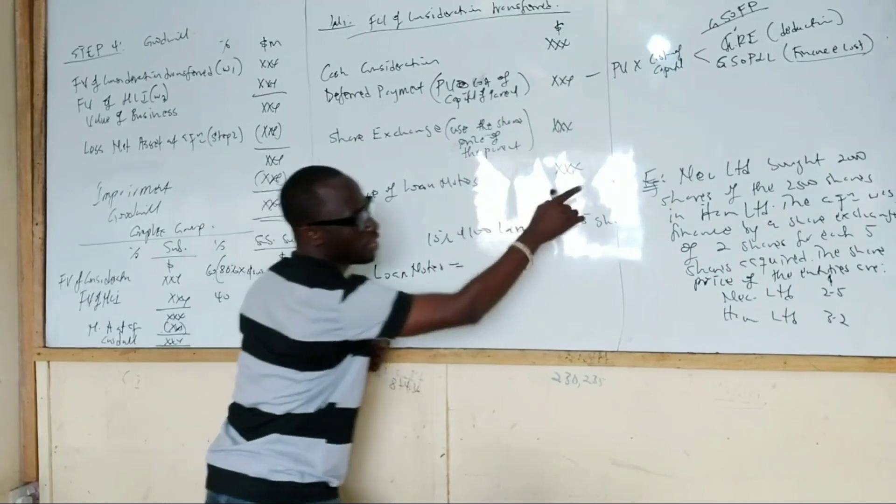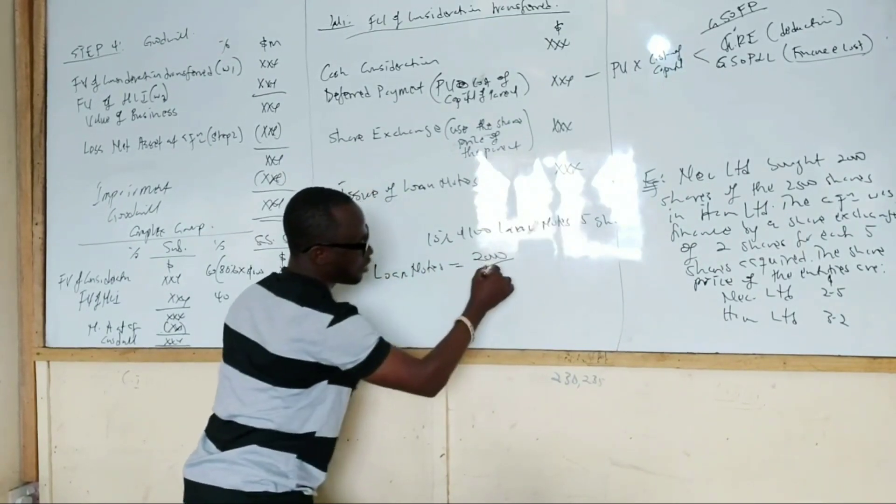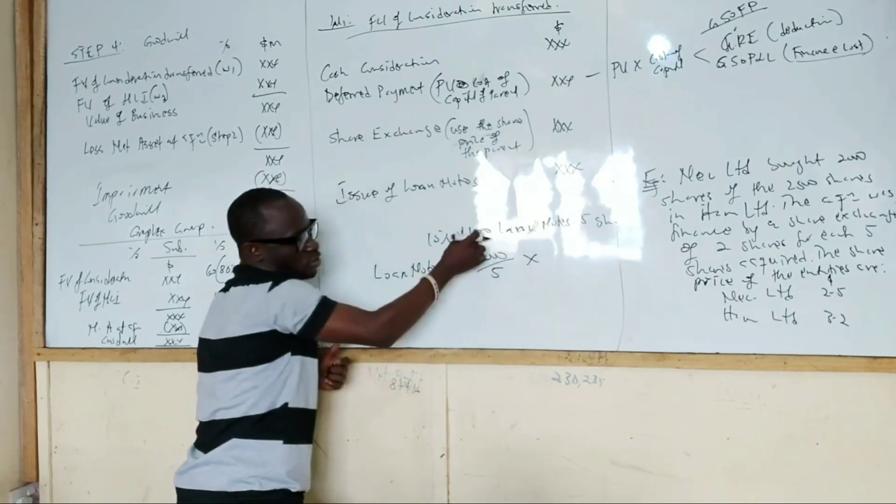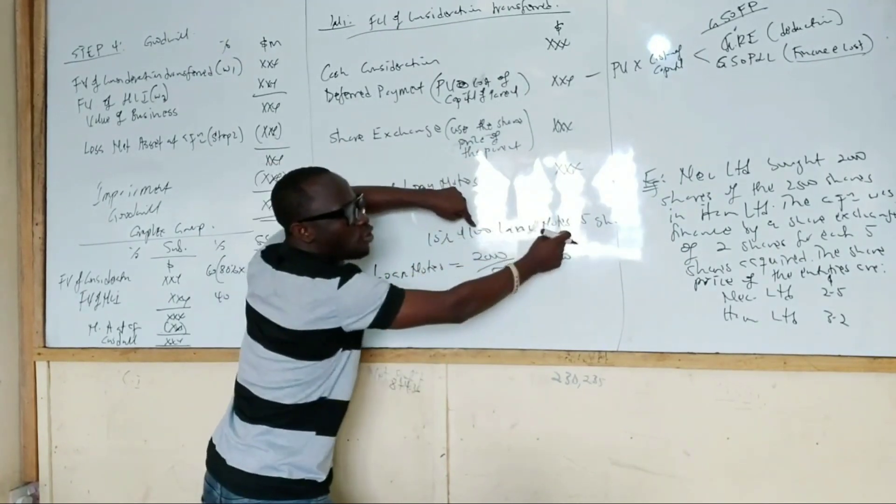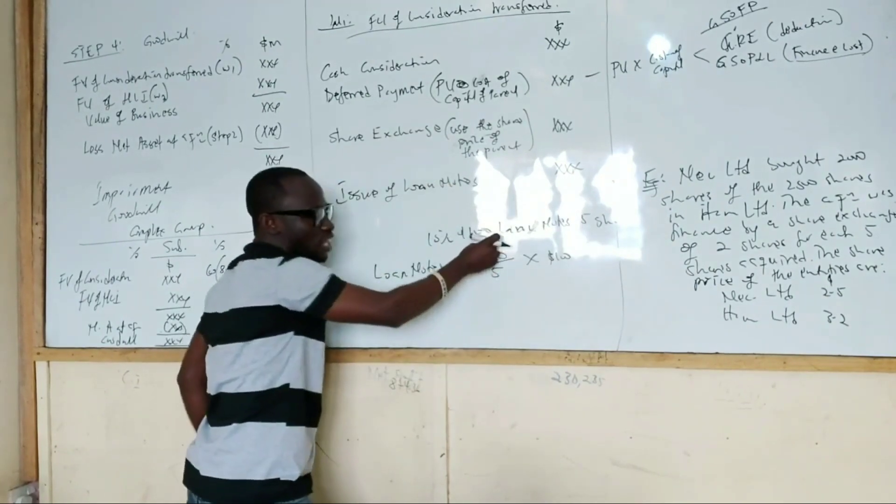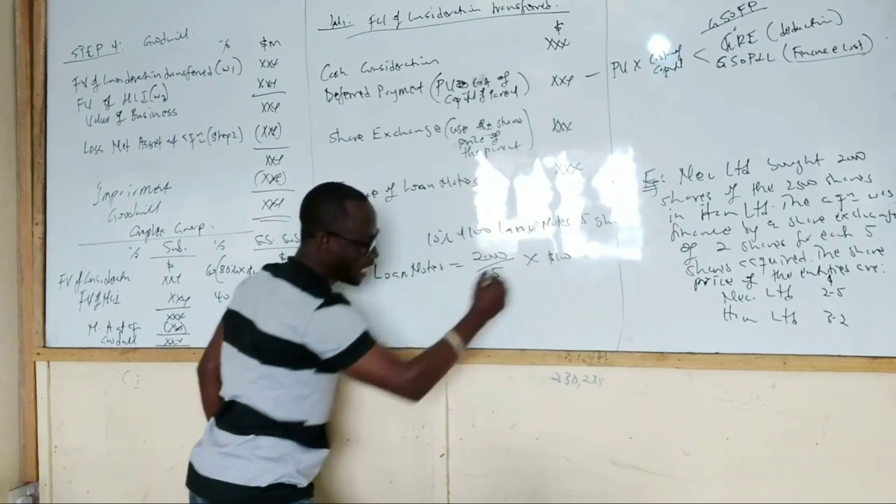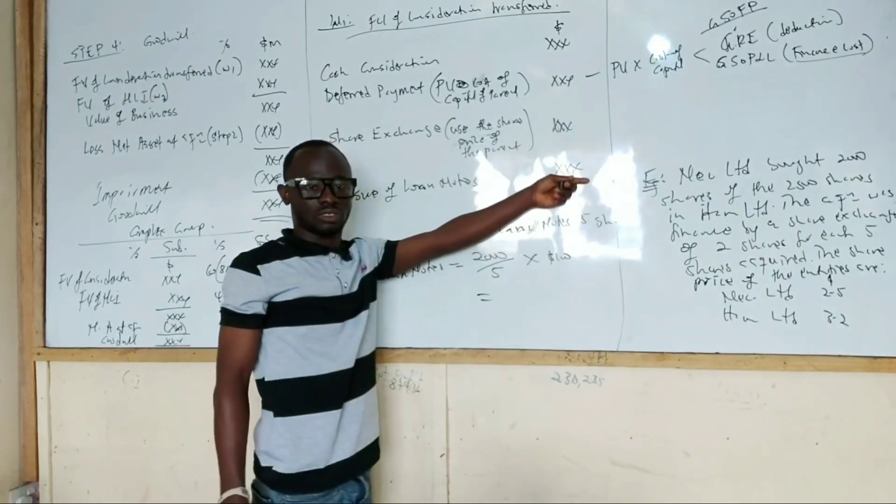It's going to be 2,000, make sense? Divided by five times 100. So we give you $100 loan notes for every five shares acquired. So it becomes $2,000 over five times $100. This figure now will give us the loan notes for the question.